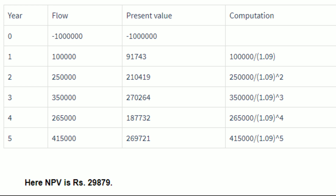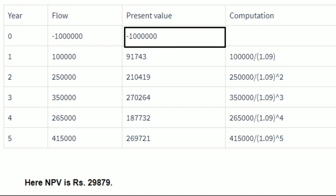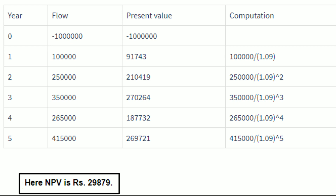After calculating the present value of each year, you have to add the present value of each year. The aggregate sum of 91,743, 2 lakh 10,419, 2 lakh 70,264, 1 lakh 87,732 and 2 lakh 69,721 is 10 lakh 29,879. This aggregate sum of 10 lakh 29,879 is deducted from the initial investment of 10 lakhs. The result is 29,879 which is the NPV.